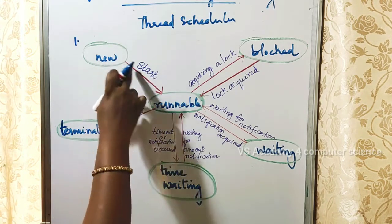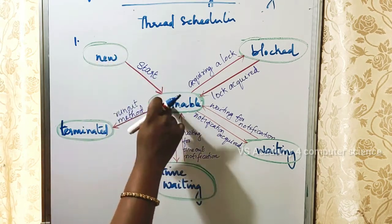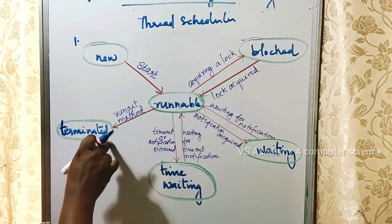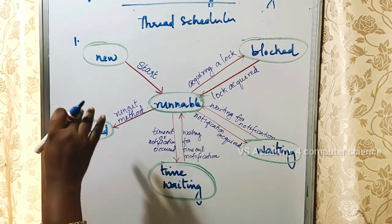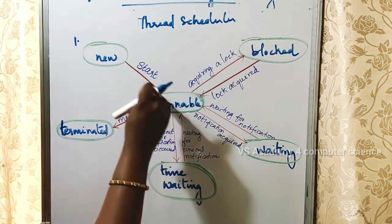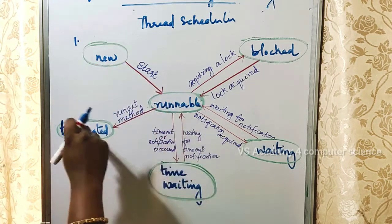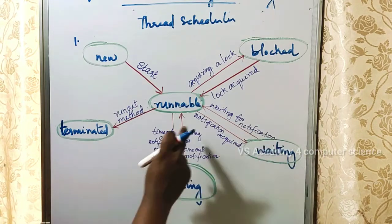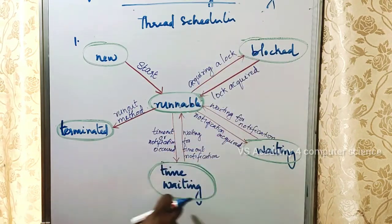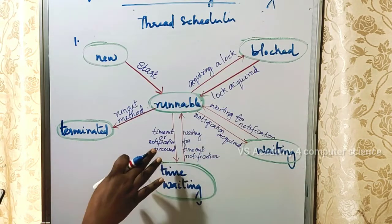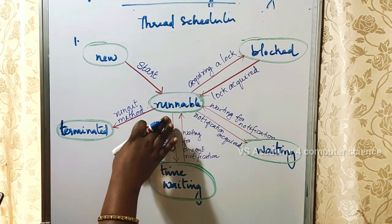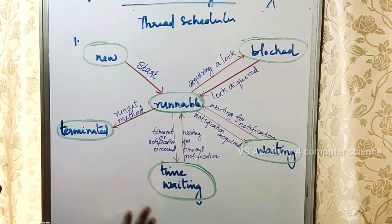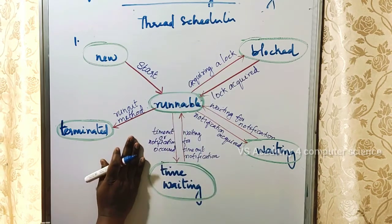So the lifecycle states are: new, runnable, blocked, waiting, timed-waiting, and terminated. The thread moves through these states depending on the working of that particular thread. This is the lifecycle of a thread.